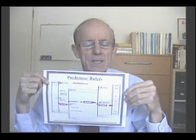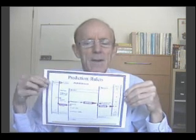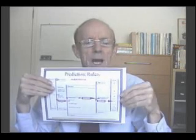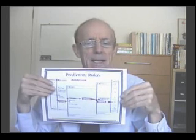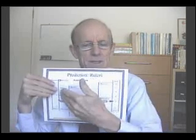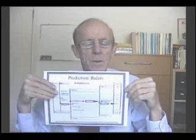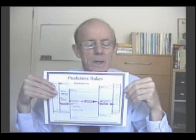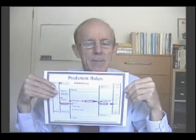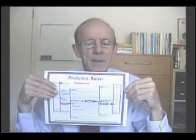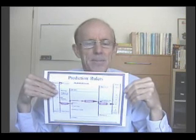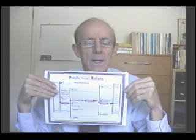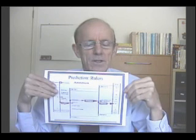Estimation works this process backwards. For observed ratings that look like this, we ask: what are the measures that they imply? These rulers can be used for both prediction — what we expect to happen — and estimation. From what actually happened, can we estimate the measures for the candidates, the raters, and the tasks, all in the same additive frame of reference on the latent variable?